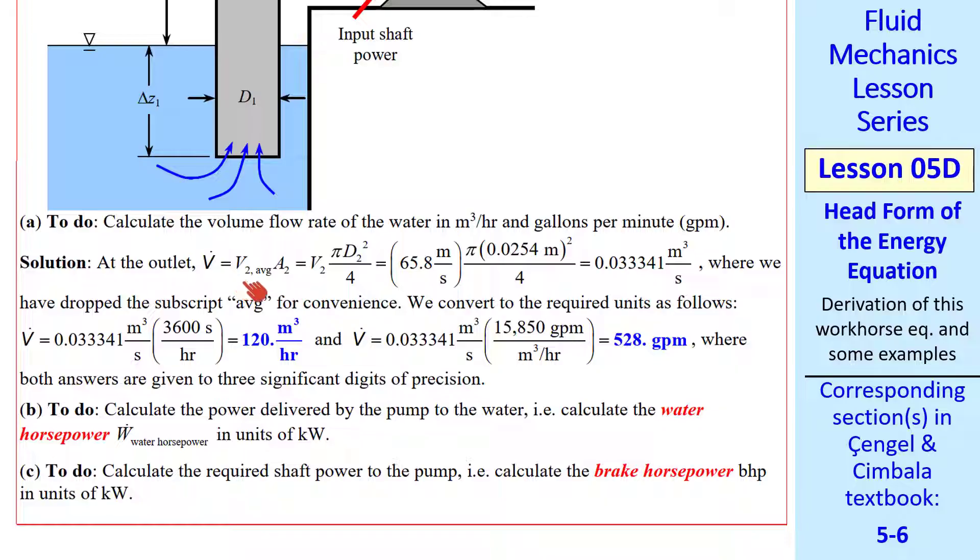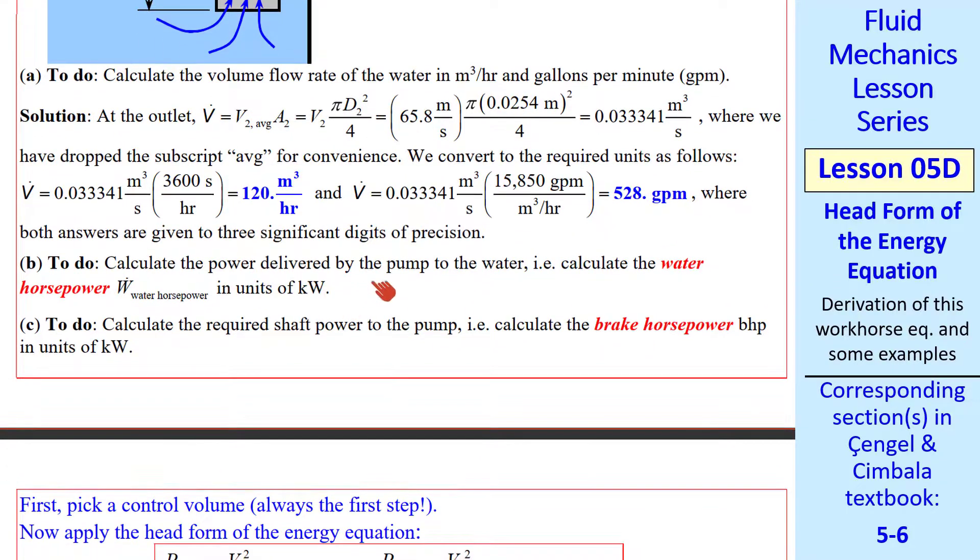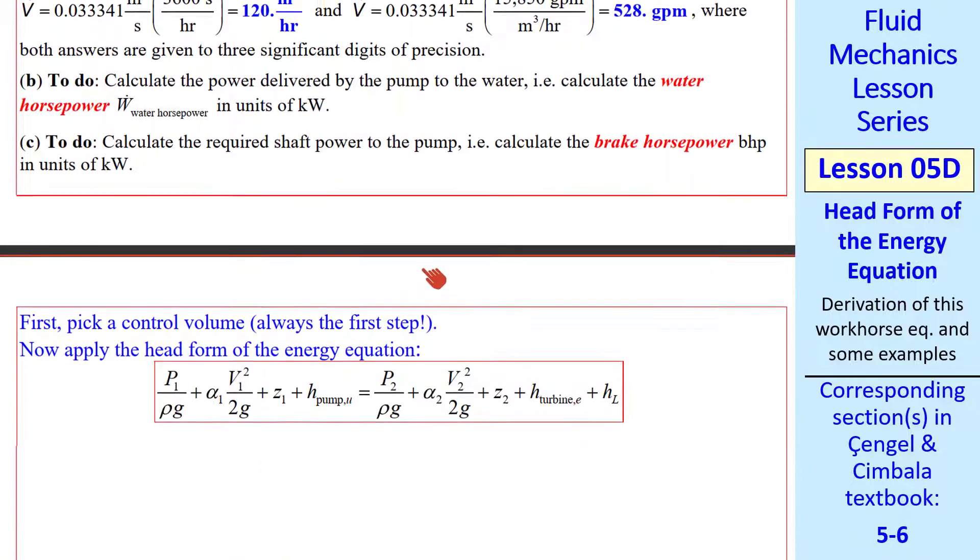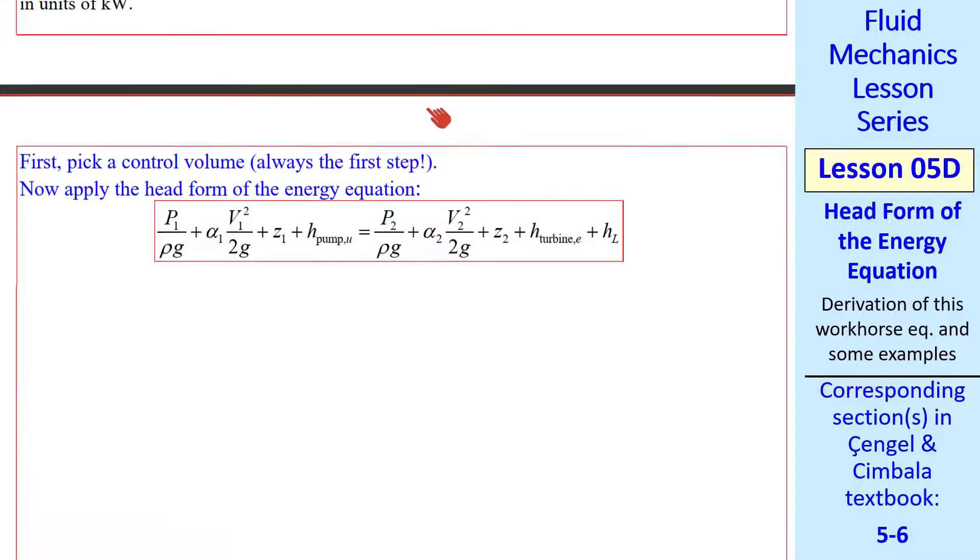For this problem, we're asked to calculate the volume flow rate of the water in meter cube per hour and gallons per minute. Since this is all review, I typed this up. Volume flow rate is just V2 average times A2. And get this volume flow rate. Now I want to calculate the power delivered by the pump to the water. In other words, the water horsepower in units of kilowatts. And the required shaft power to the pump. In other words, the brake horsepower, again in units of kilowatts.